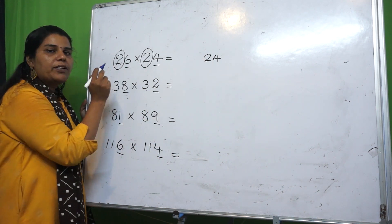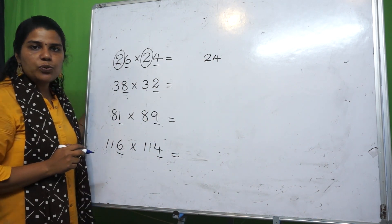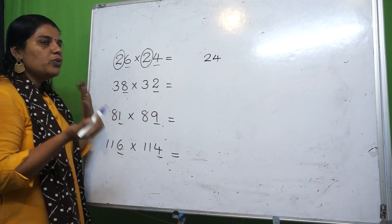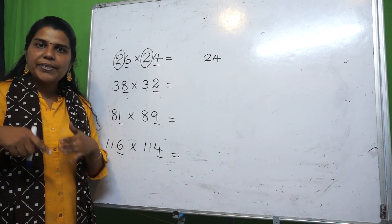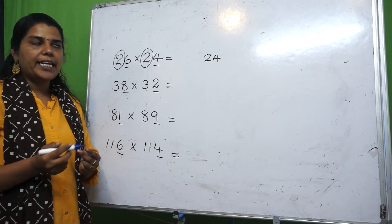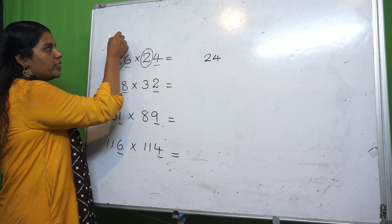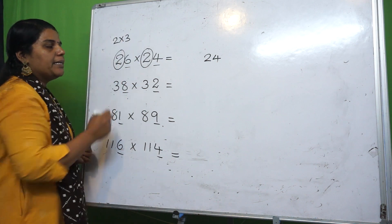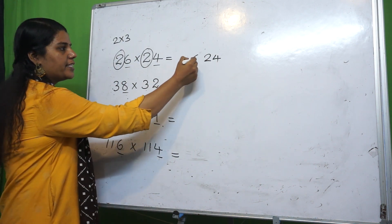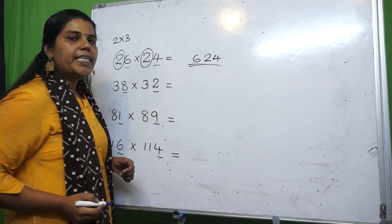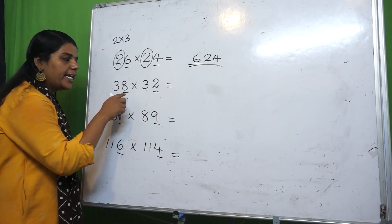Now the tens digit is the same number — it's 2. The next number after 2 is 3. So you multiply 2 and 3: 2 times 3 is 6. The answer is 6 followed by 24. That is the answer to the first question.